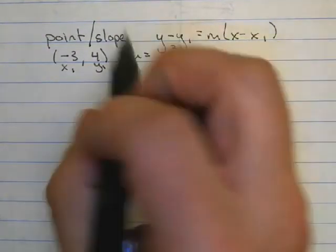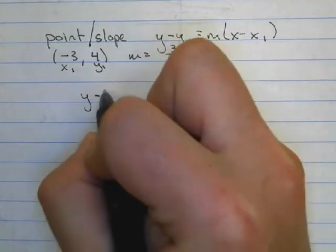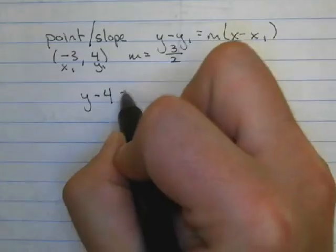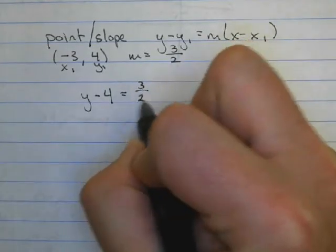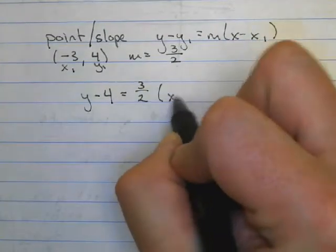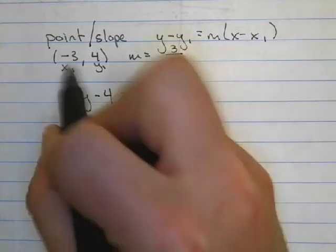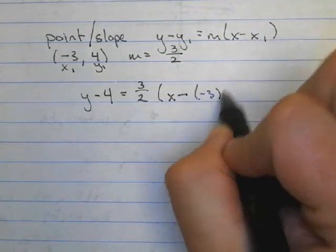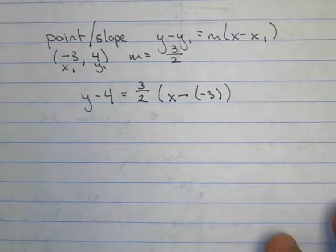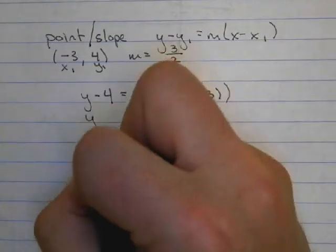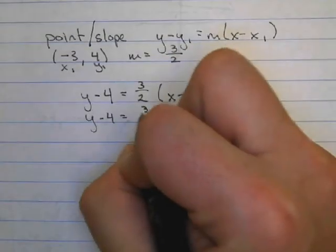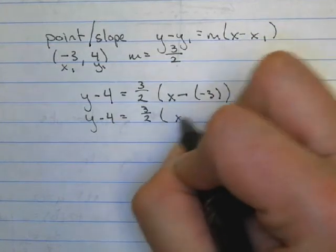So now we just plug and play. So I can go y minus 4 is equal to 3 halves times x minus, and my x₁ is a negative 3. And since I have minus and minus, I'm going to go ahead and simplify that, and I'll have y minus 4 is equal to 3 halves times x plus 3.